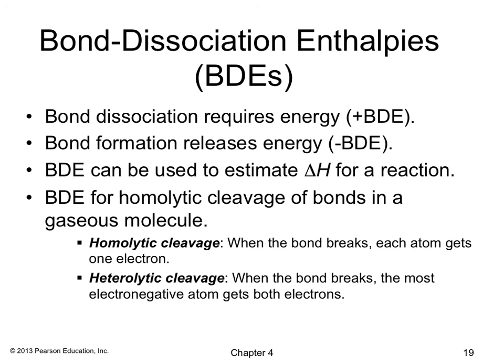Bond dissociation enthalpies (BDEs) are important to understand. Positive BDEs require energy — that is bond dissociation, meaning cleavage, and cleavage will always have positive BDEs. Bond formation releases energy, so it will have negative BDEs. BDEs can be used to estimate ΔH for a reaction, specifically for free radical reactions, and refer to homolytic cleavage of bonds in a gaseous molecule. In homolytic cleavage, each atom gets one electron, forming a radical.